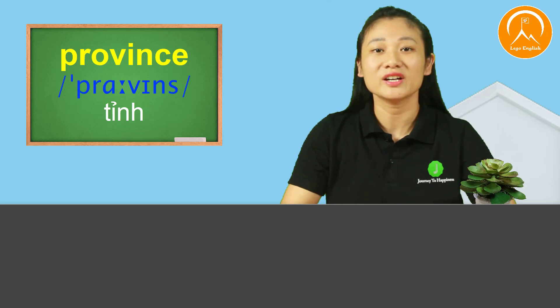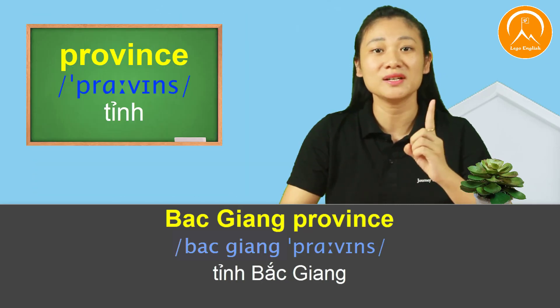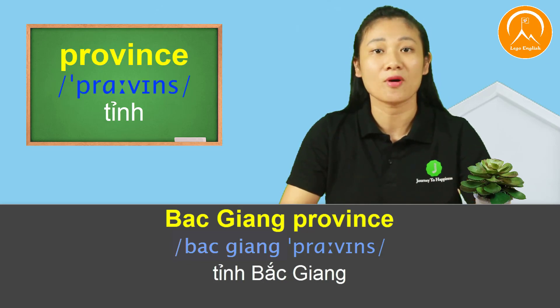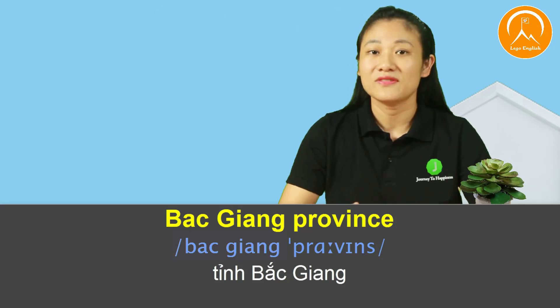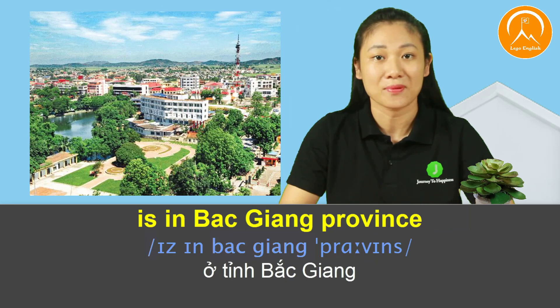The next vocabulary word is 'province,' meaning a province or administrative region — equivalent to a city-level division. For example, Bac Giang Province. Let's practice the pronunciation. The stress falls on the first syllable: 'pro-vince.' The voice drops toward the back. Say it again: Province. Bac Giang is Bac Giang Province. In the lesson, the sentence states: An Lac Lower Secondary School is in Bac Giang Province.